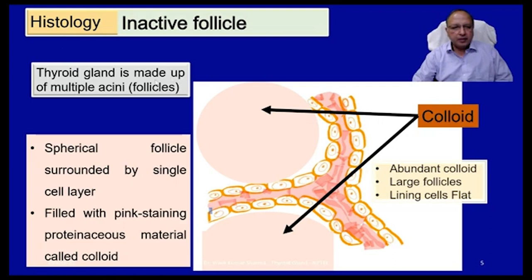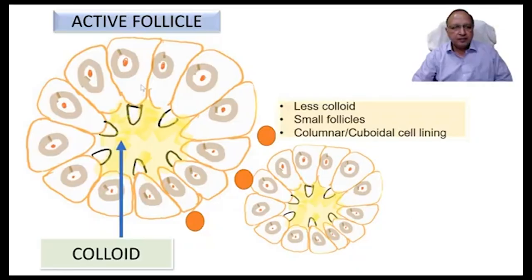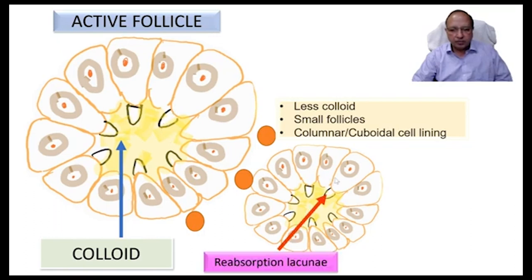Histology. The thyroid gland is made up of multiple acini or follicles, present either in an active secretion state or an inactive state. In the inactive follicle, the center contains abundant proteinaceous material called colloid; the follicles are larger and the lining cells are flat and thin. In the active follicle, the cells are columnar or cuboidal and the colloid is lesser. Resorption lacunae are also seen, produced because the colloid is being utilized for thyroid hormone synthesis and reabsorbed into the thyroid cells.